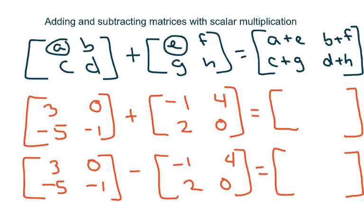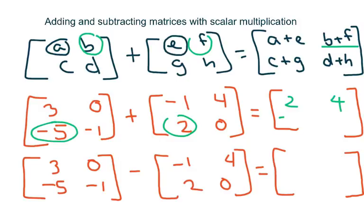So this will be 3 minus 1 plus negative 1, which is 2. Zero plus 4 — because it's b plus f — so zero plus 4 is 4. Negative 5 plus 2 is negative 3, and negative 1 plus 0 is negative 1. It's very simple. Now we can also subtract, so I'm going to go ahead and erase here.